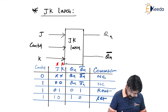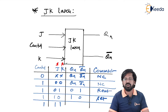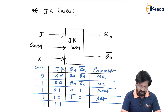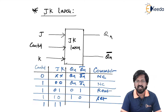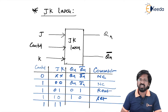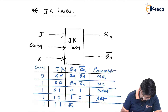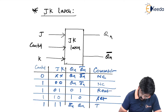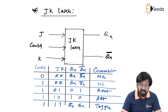Now we shall see the last case where control equals 1 and J equals 1, K equals 1. Here we should not take SR as a reference, because if we did there would be no difference between SR and JK. This is the speciality of JK which SR does not have. In SR latch when S equals 1 and R equals 1 it is called a void condition, because Qn and Qn bar are both forced to become 1, which is logically incorrect. In JK, what differs it from SR is that Qn becomes Qn bar and Qn bar becomes Qn — this is called the toggle condition.